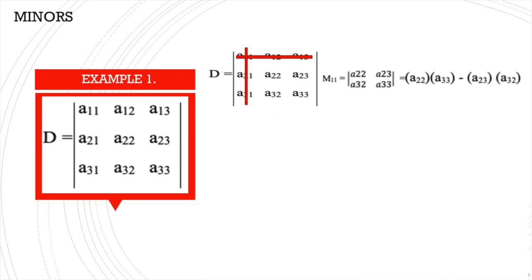Para makuha ang minor ng a11, kailangan nating i-delete ang entire row at column nito. So as you can see, deleted na ang first row at first column. Ang natitirang elements na lang ay a22, a23, a32, at a33. Yun ang magiging minor.